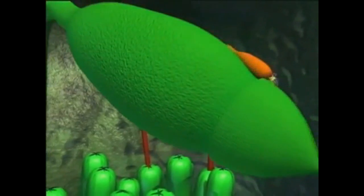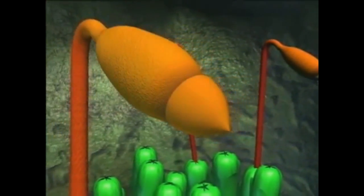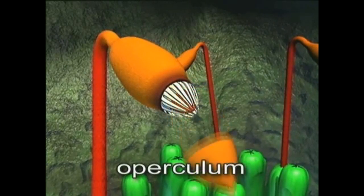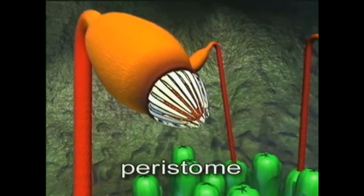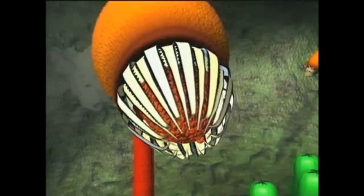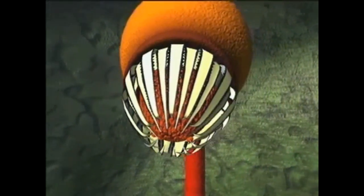As the spores are forming, the capsule dries out and hardens. Soon the lid or operculum falls away, revealing a ring of fine teeth, called the peristome. These surround an opening in the capsule.